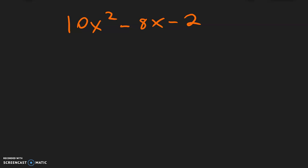So for this example, the biggest number that we can divide everything by is a 2. Because 10 divided by 2 is 5, 8 divided by 2 is 4, and 2 divided by 2 is 1.